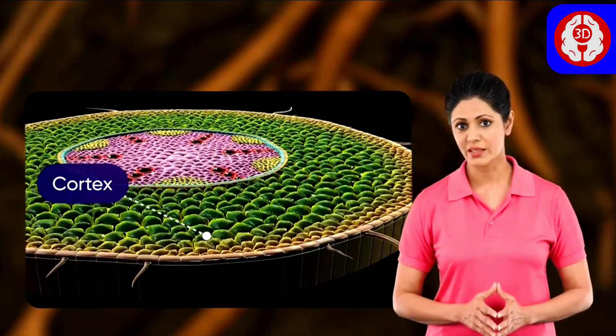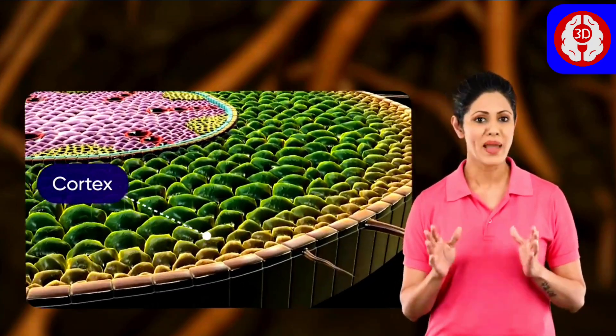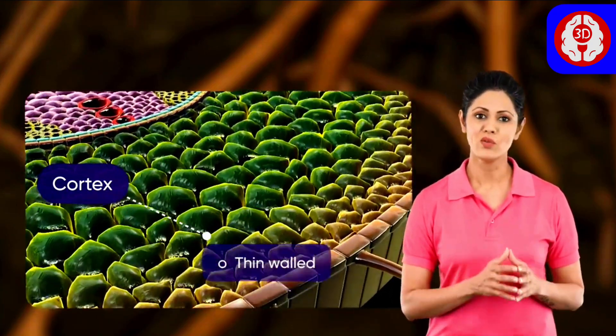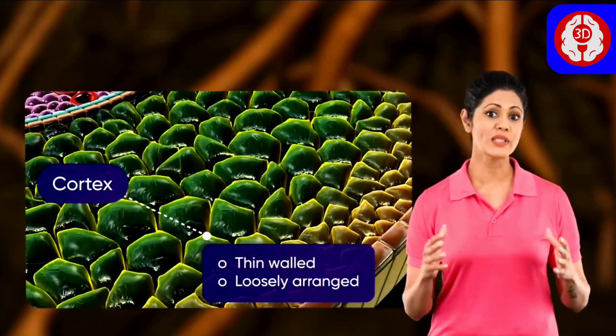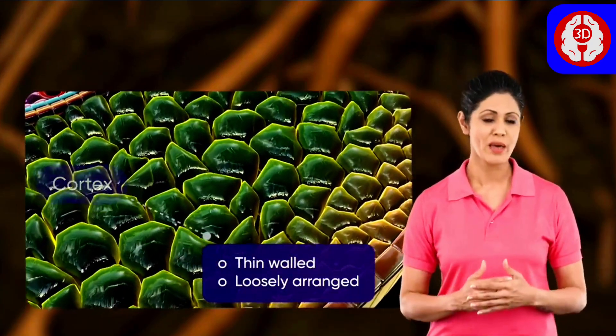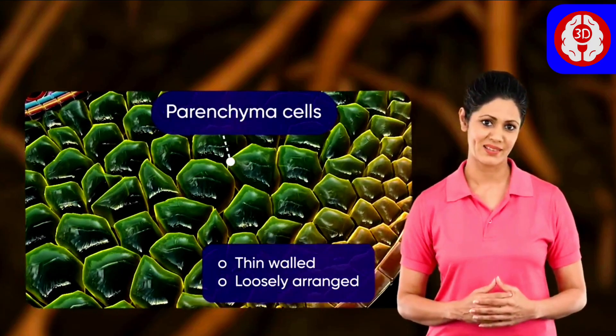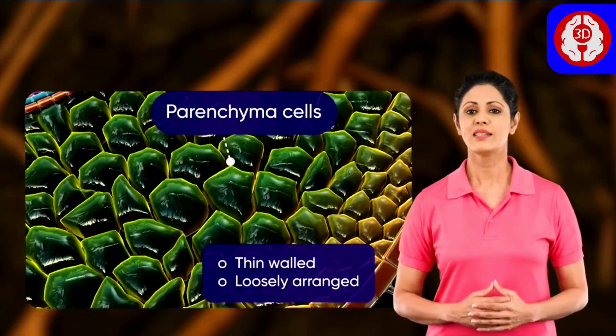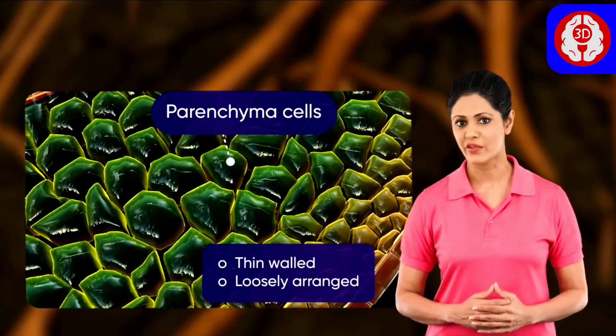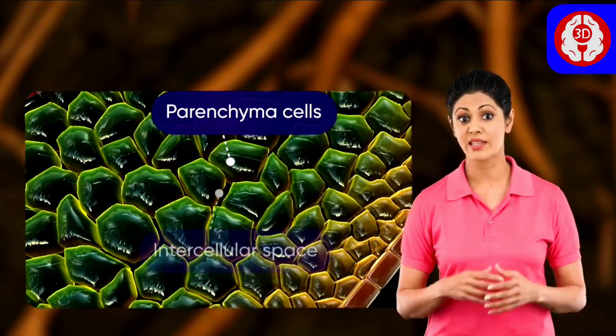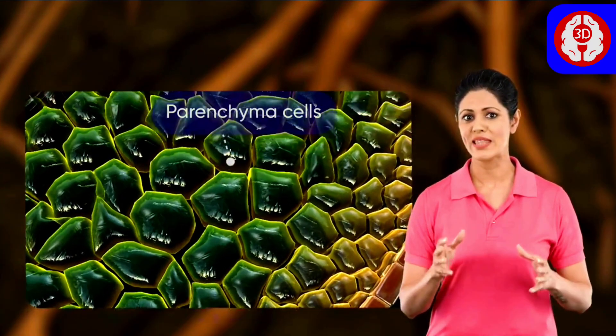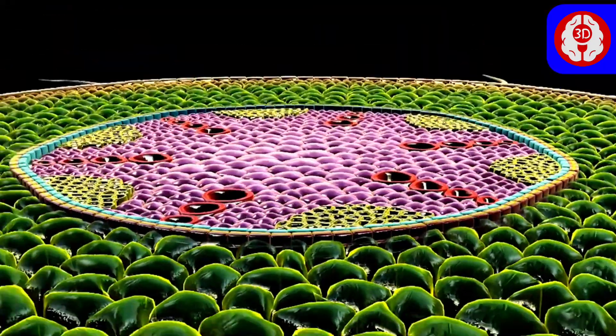The cortex consists of many thin-walled loosely arranged parenchyma cells. Since they are loosely arranged, there is intercellular space between them.